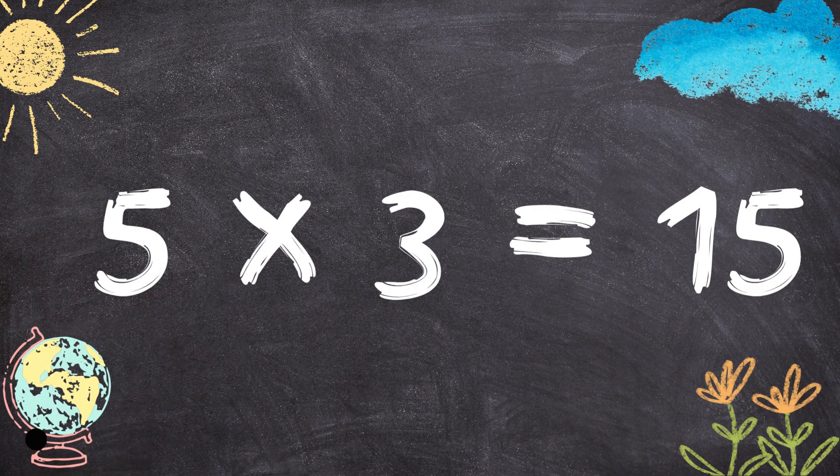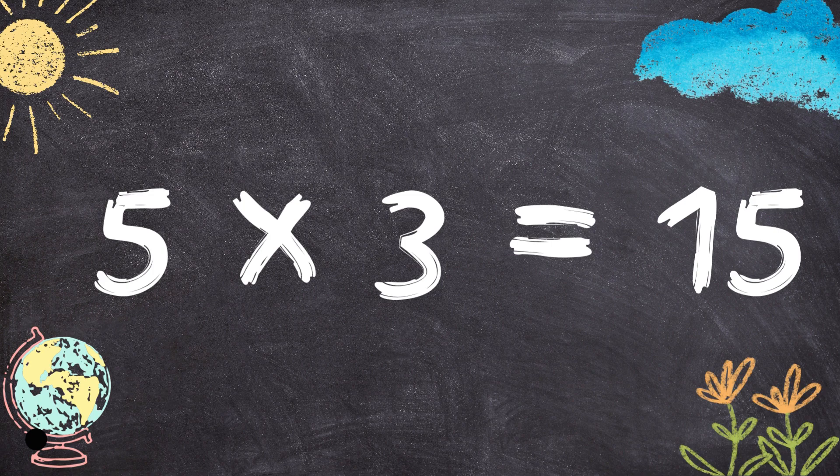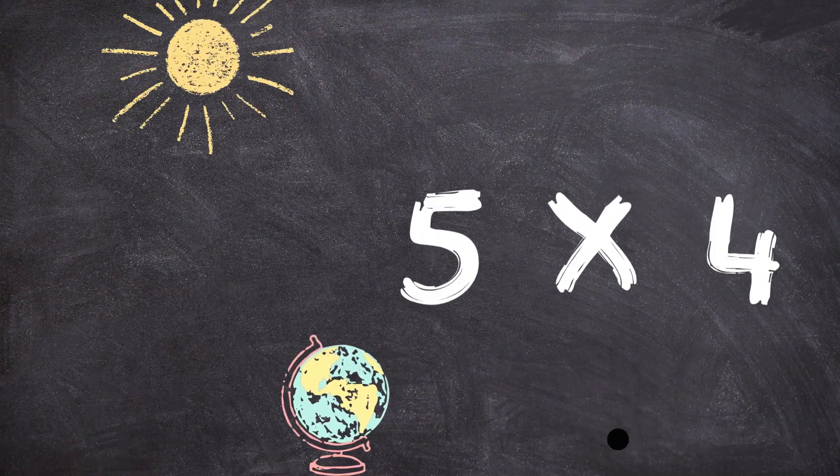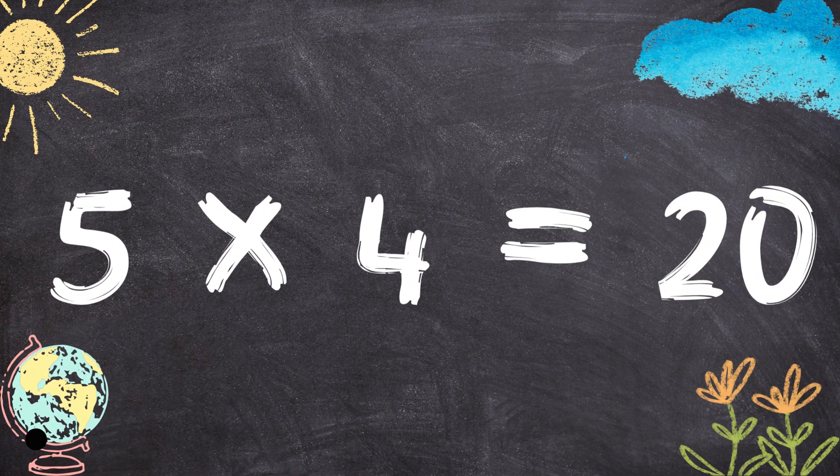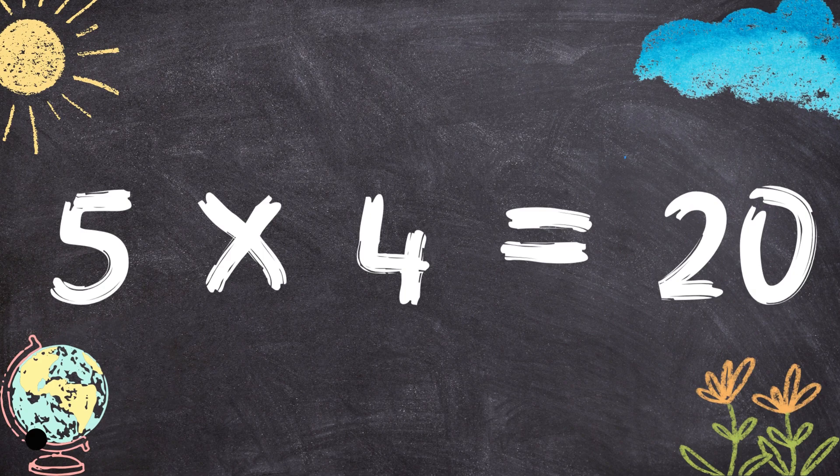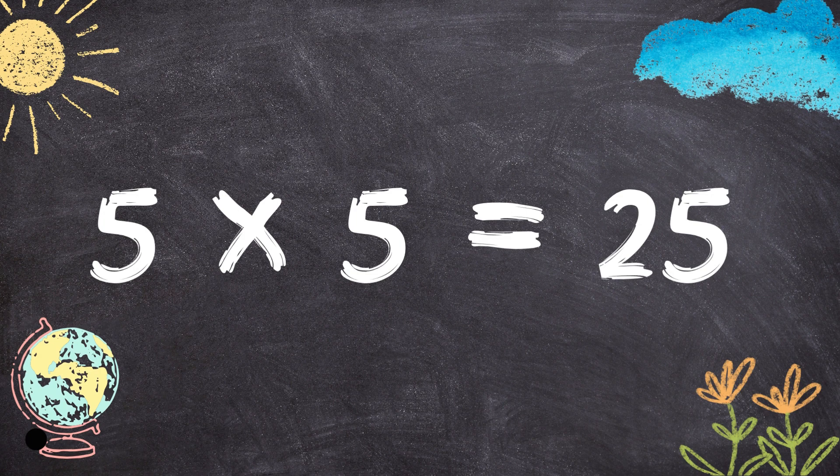5 times 3 equals 15. 5 multiplied by 4 equals 20. 5 multiplied by 5 equals 25.